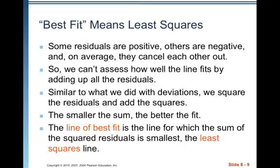So the line of best fit is the line for which the sum of the squared residuals is smallest, the least squares line, or the least squares regression line, and sometimes you'll see it abbreviated as the LSRL. So line of best fit, linear model, least squares line, least squares regression line, and LSRL all mean the same thing. They all mean the line that best fits the data.